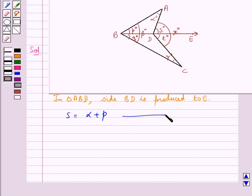Now next, if you consider triangle CBD, in this triangle also, side BD is produced to E and the exterior angle formed is T. Using the key idea, we would say T equals the sum of the interior opposite angles, which is Q plus gamma. Let this be equation 2.